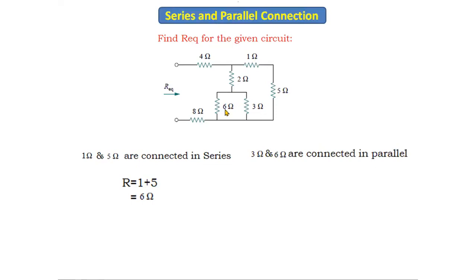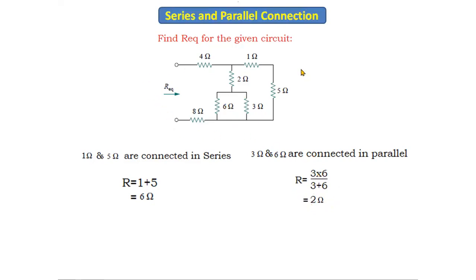This 6 ohm resistor and 3 ohm resistor are connected in parallel — you can see the current is dividing here. When two resistors are connected in parallel, the formula is R = (R1 × R2) / (R1 + R2). So we get (3 × 6) / (3 + 6), which gives R = 2 ohms.